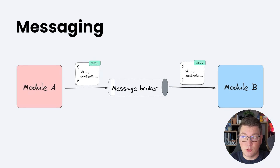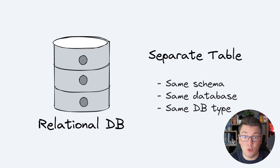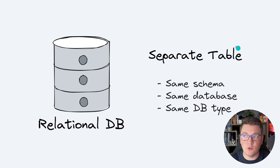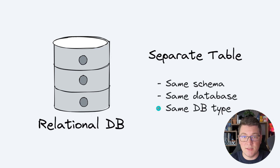Let's also talk about data isolation between the modules. There are four levels of data isolation. The first level is where you basically have no isolation between your modules — as far as the database is concerned, the data for your modules is stored in separate tables, but you're still using the same database schema, the same physical database, and the same database type. In this case we are using a relational database.